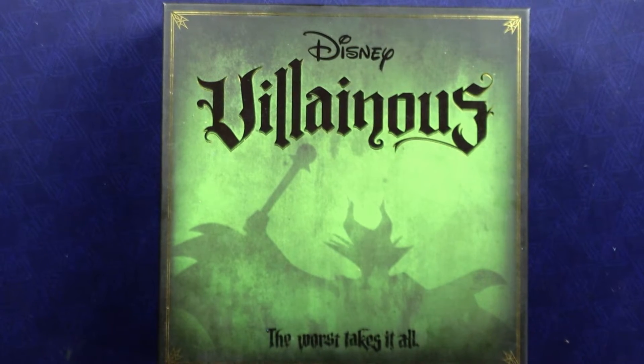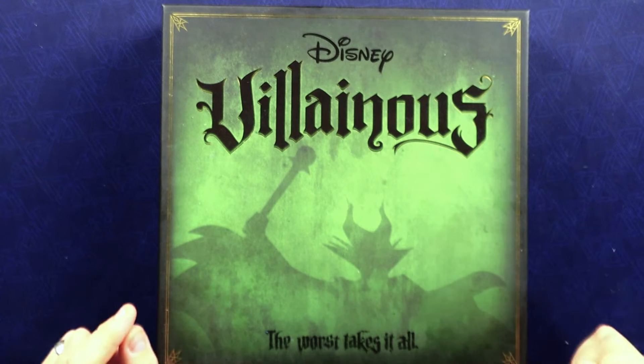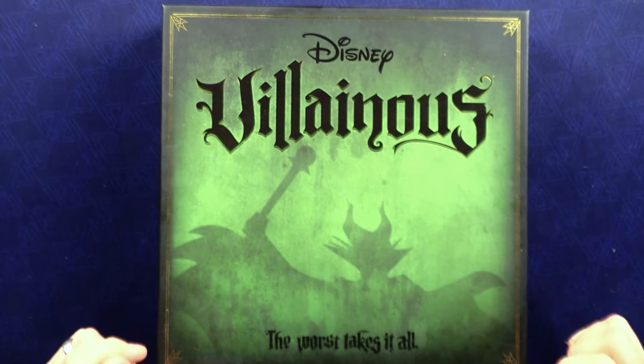All right, so here it is, Disney Villainous, the main core set. This is actually the box lid and the component I'm going to show you is underneath it, but at first there's going to be a few components that I'm going to show you. So let me take this off of here.